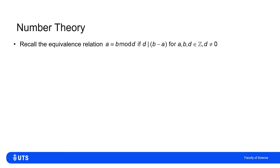Think back to the video where we discussed equivalence relations. We can say that two integers a and b are equivalent if they have the same remainder when divided by another nonzero integer d, or equivalently if d divides the difference b minus a.